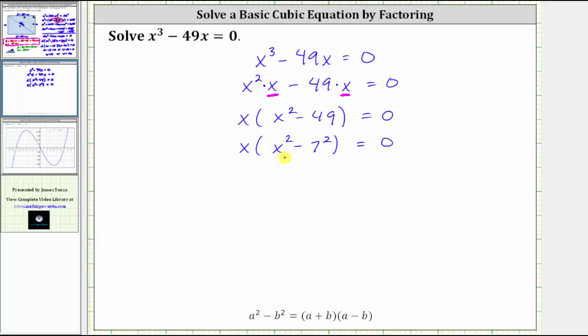We will have a factor of x plus seven, and a factor of x minus seven. So factoring further, we have x times the quantity x plus seven times the quantity x minus seven equals zero.